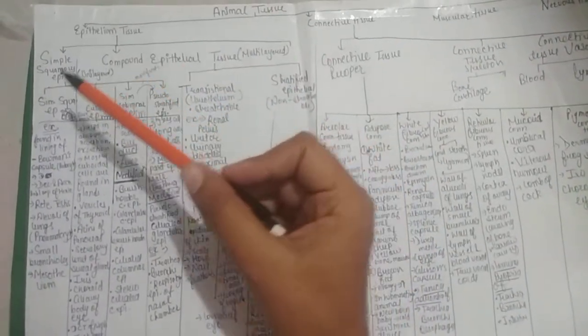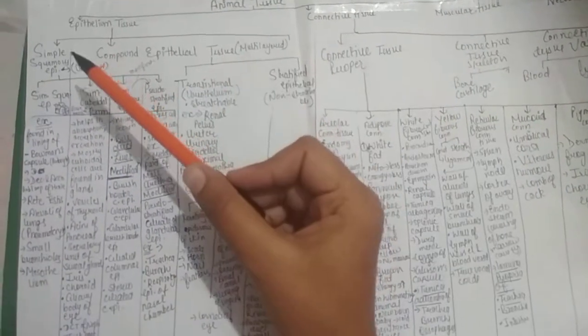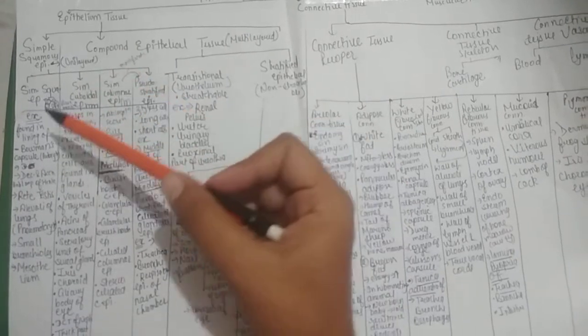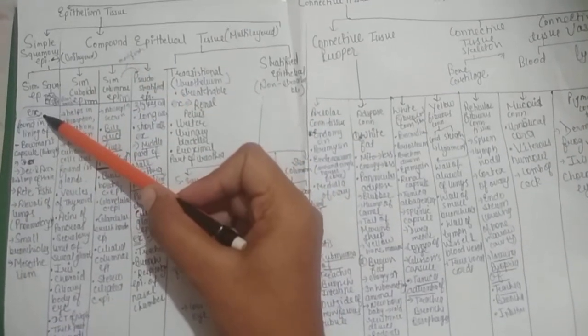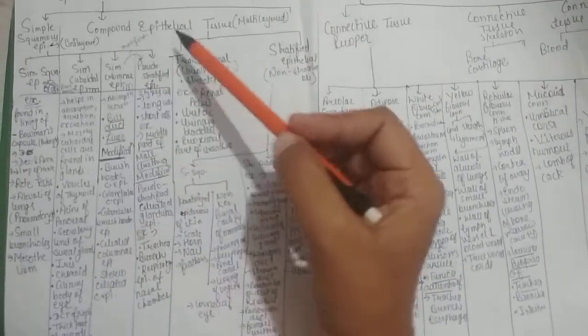Epithelium tissue can be divided into simple squamous epithelium and compound epithelium tissue. In simple squamous epithelium tissue it is unilayered and can be further divided into simple squamous epithelium, simple cuboidal epithelium, simple columnar epithelium, and pseudostratified.